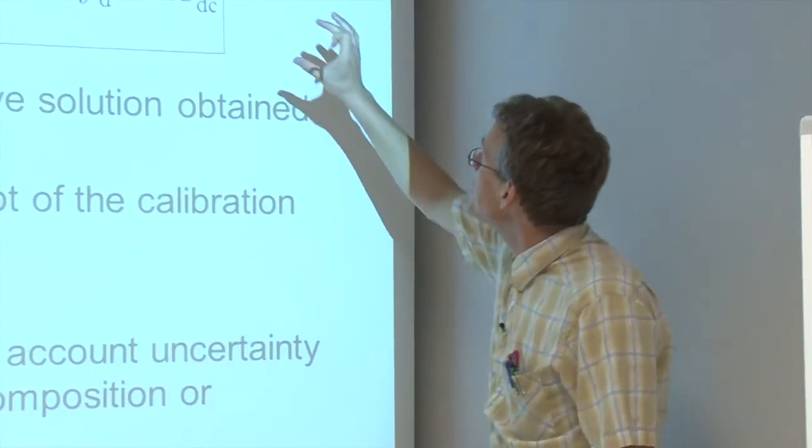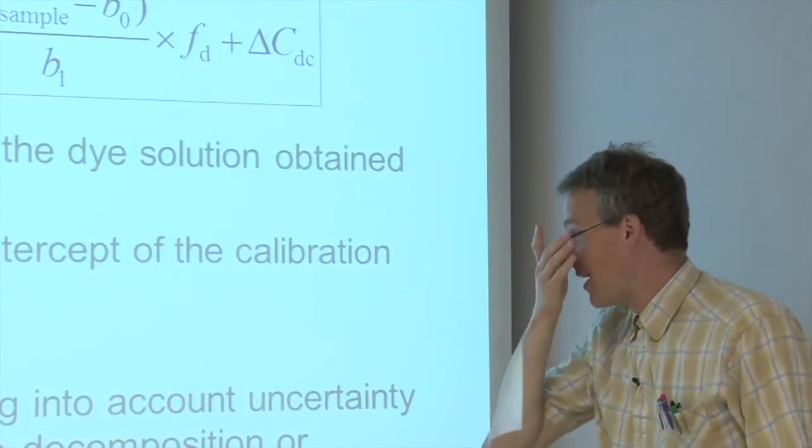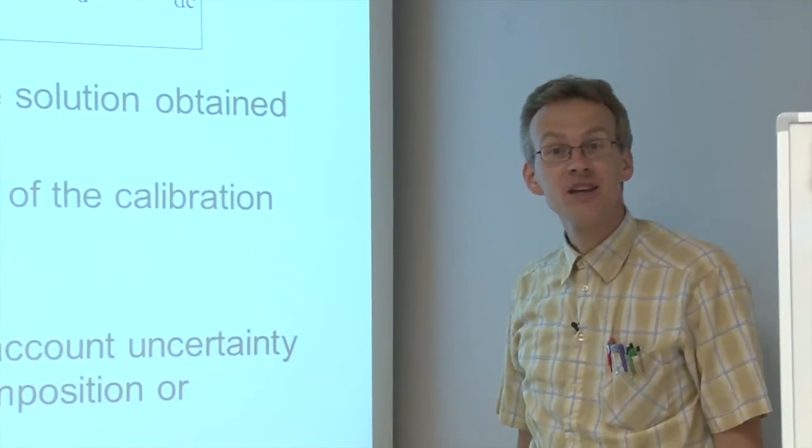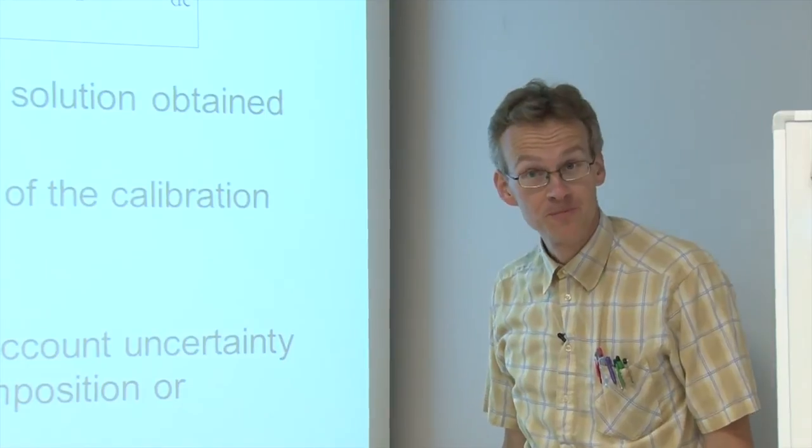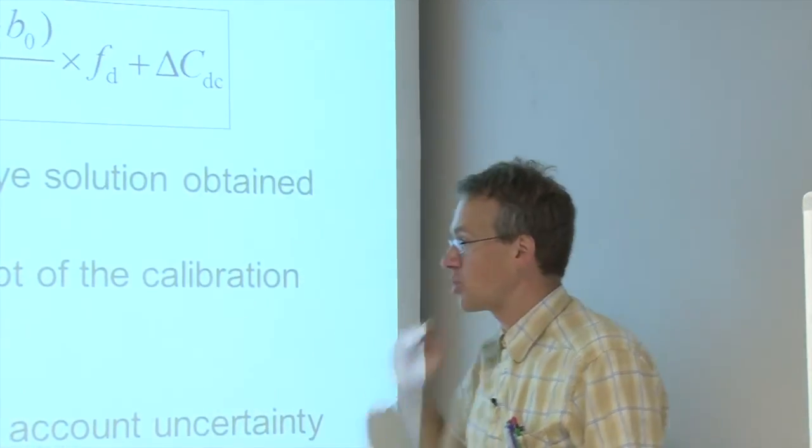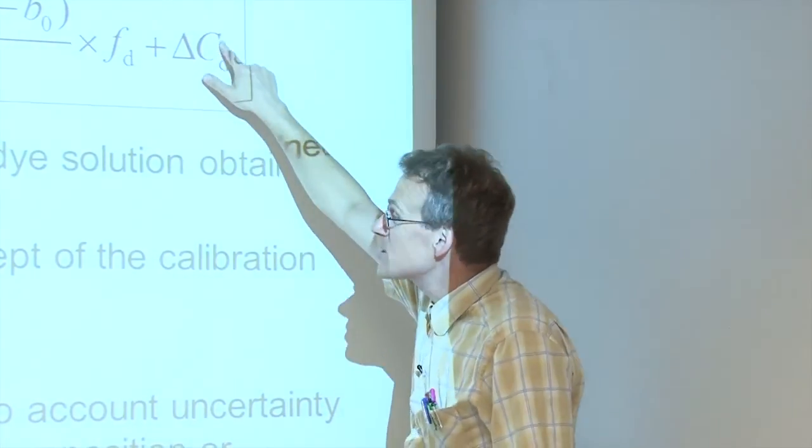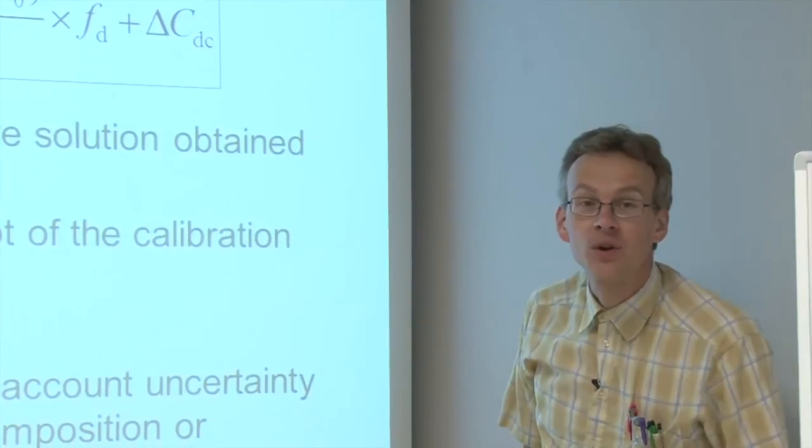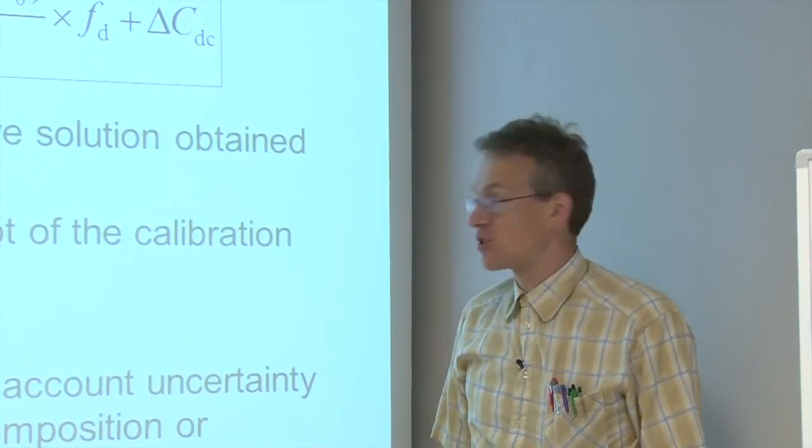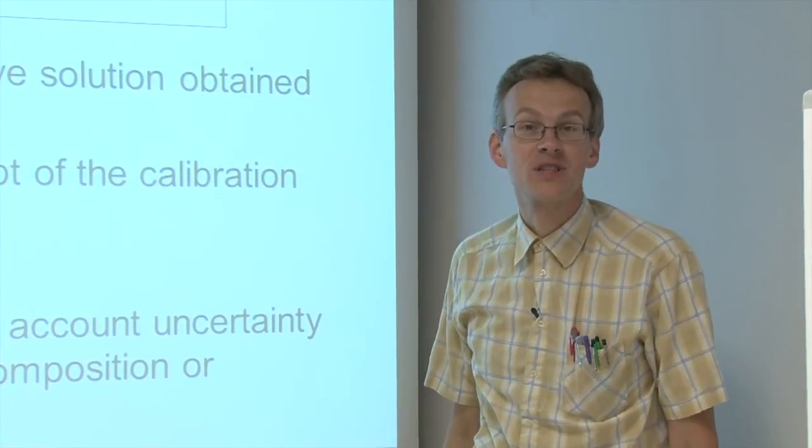However, we need to include one more term into this model. In fact, this ΔC_dc is an additional term which carries value zero, as we will see afterwards, but which has uncertainty. Via this term we take into account some uncertainty sources, most importantly the uncertainty due to possible decomposition or contamination of the sample.